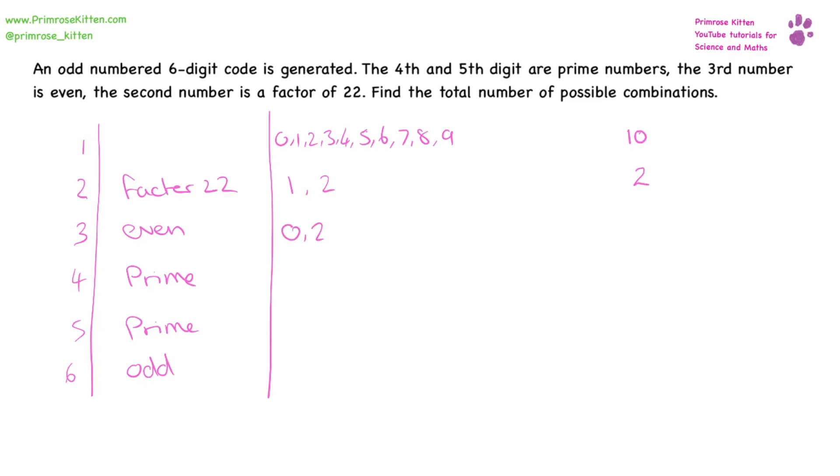Even numbers are zero, two, four, six, eight. Giving us five different things.